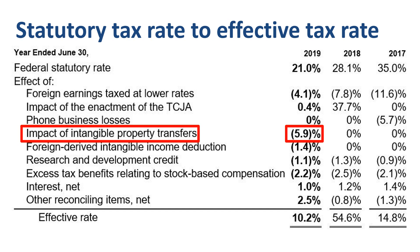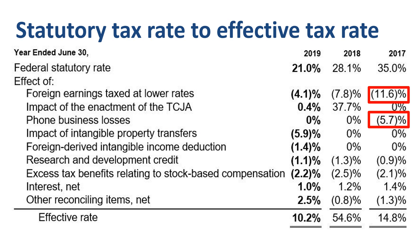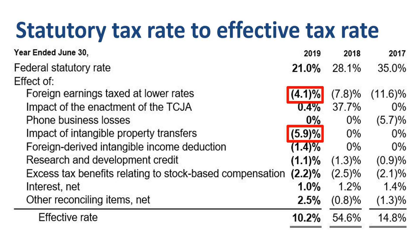The remaining line items are much smaller in size than the first four. Analyzing the statutory tax rate versus the effective tax rate year by year: in 2017, the main items bringing the effective tax rate down from 35% to 14.8% were foreign earnings taxed at lower rates and the realization of tax benefits related to phone business losses. For 2018, what brought the effective tax rate up from 28.1% to 54.6% was mainly the impact of the enactment of the new US corporate tax law, partially offset by foreign earnings taxed at lower rates. For 2019, what brought the effective tax rate down from 21% to 10.2% was mainly foreign earnings taxed at lower rates and the impact of intangible property transfers.